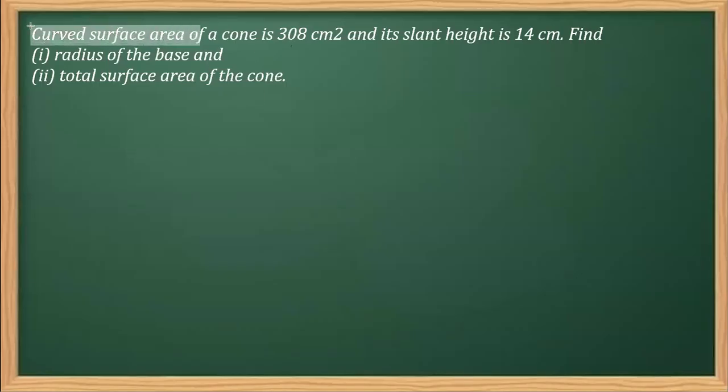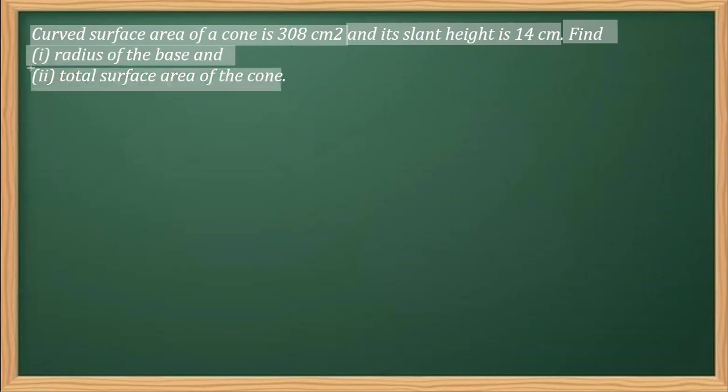In this question, the curved surface area of a cone is 308 cm² and its slant height is 14 cm. We have to find the radius of the base in the first part, and in the second part, we have to find the total surface area.